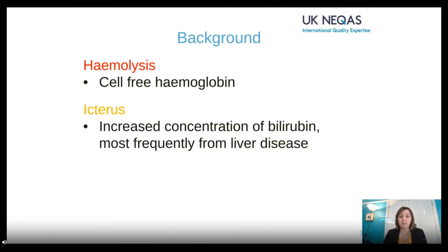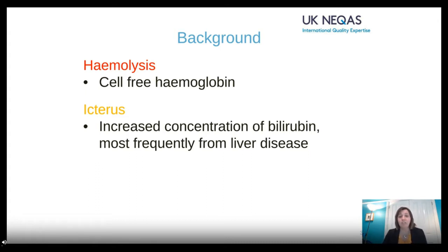Icterus is when specimens have a yellow or green tinge, because of an elevated bilirubin within the specimen. You most frequently see this in liver disease, but importantly it's not just the yellow colour that could affect spectrophotometric assays — bilirubin can also interfere with assays that use hydrogen peroxidase and can cause a false decrease in results. So you could be misreporting in some assays that use hydrogen peroxidase if you have an elevated icterus index.